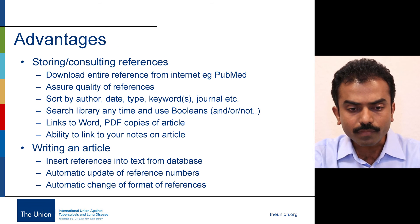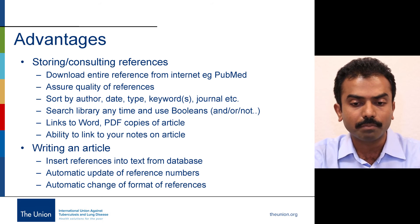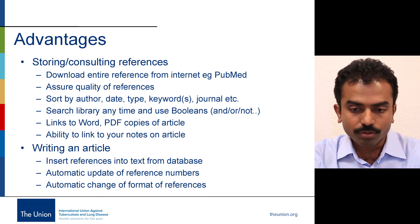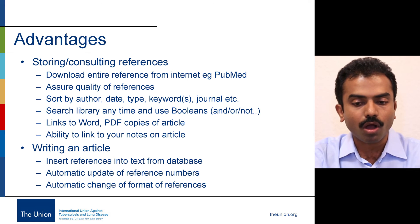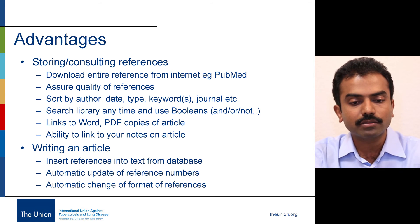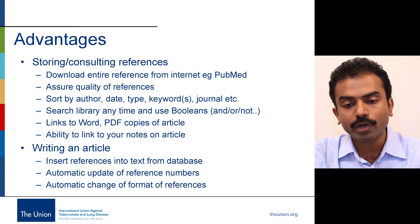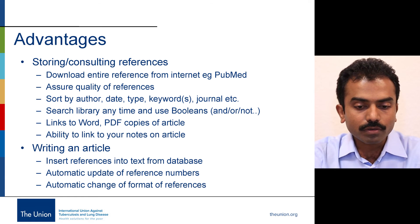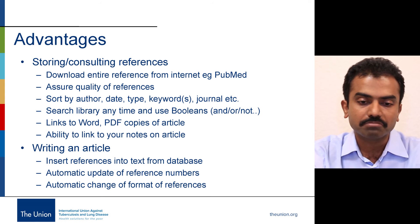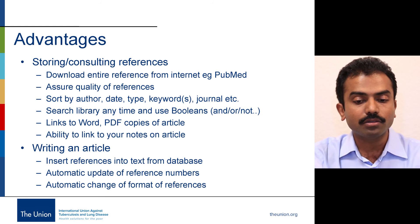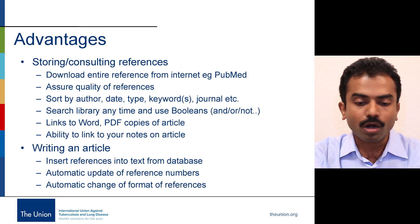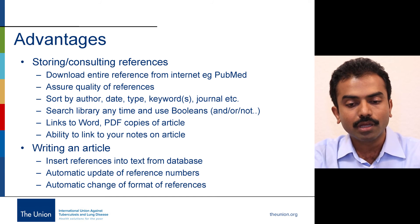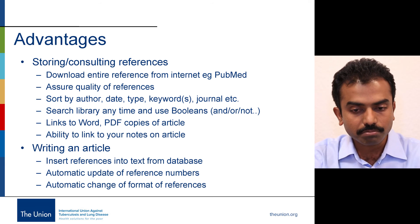There are many advantages of using these softwares. One, you can manage your references very well. You can download entire references from the internet — when searching for literature in PubMed, for example, you can directly download references into the software. It assures quality. It helps in sorting by author, date, keywords, journal — anything you can think of. You can search and get what you want. You can have links to Word or PDF copies of articles, make your own personal notes, and get them when you want. When writing an article, you can draw references straight from the database and cite in your text, and it all gets automatically updated. If you want to change the format to a different journal style, it can all happen at the click of a button. Strong suggestion — please learn one of these tools.